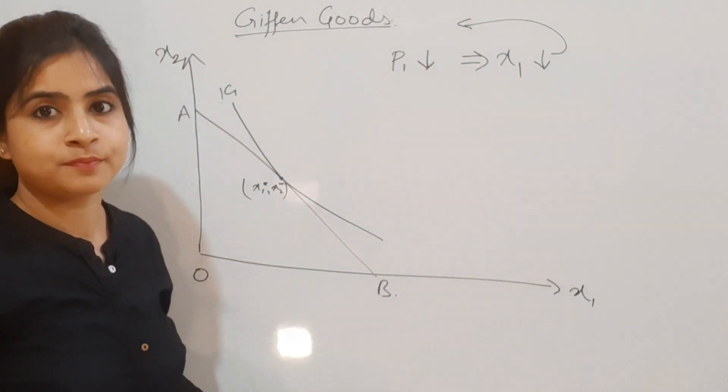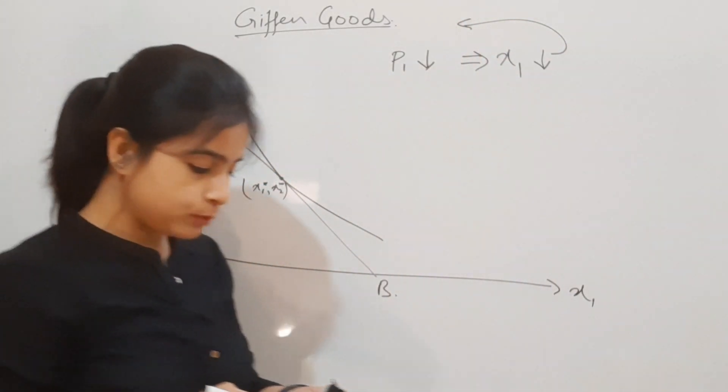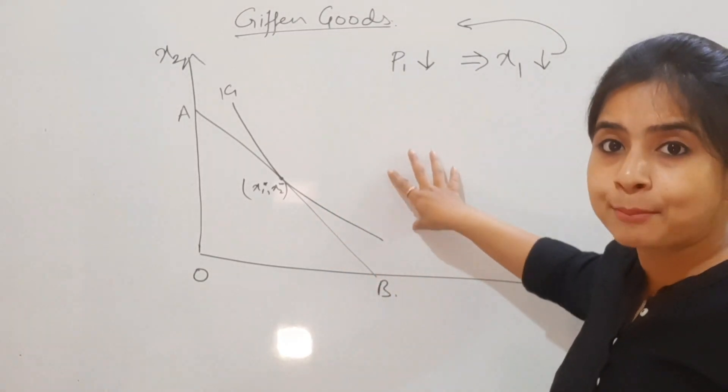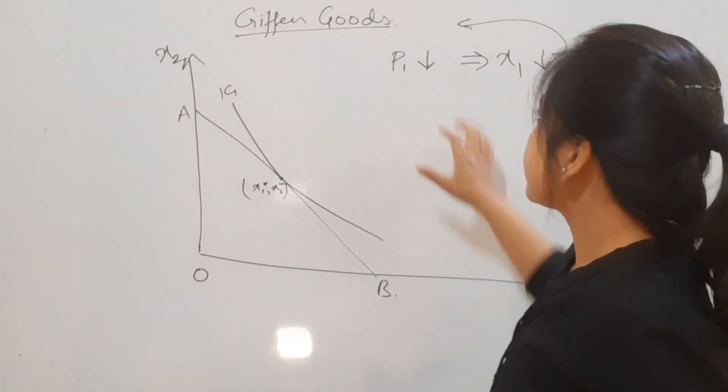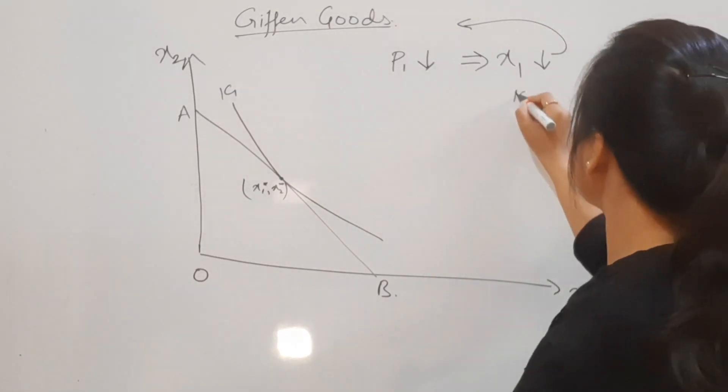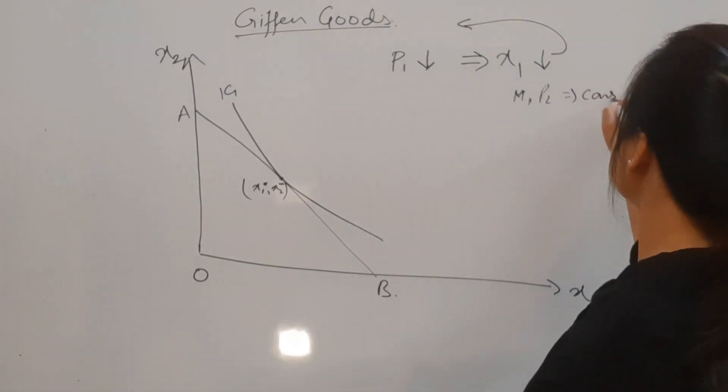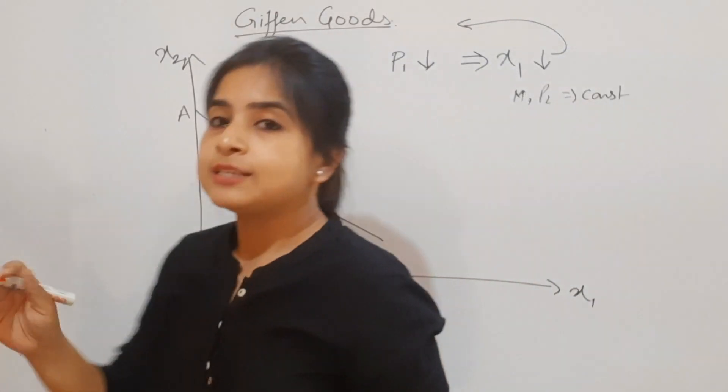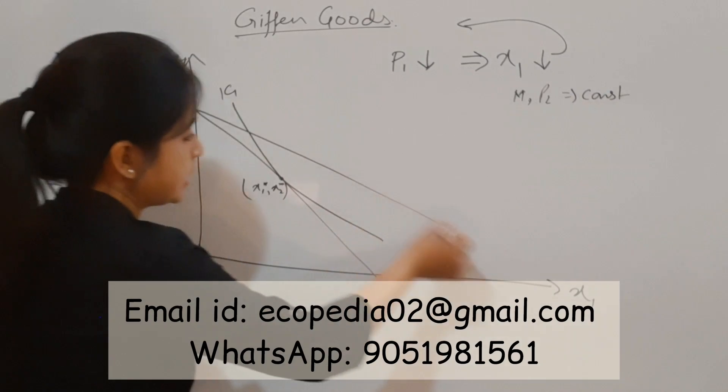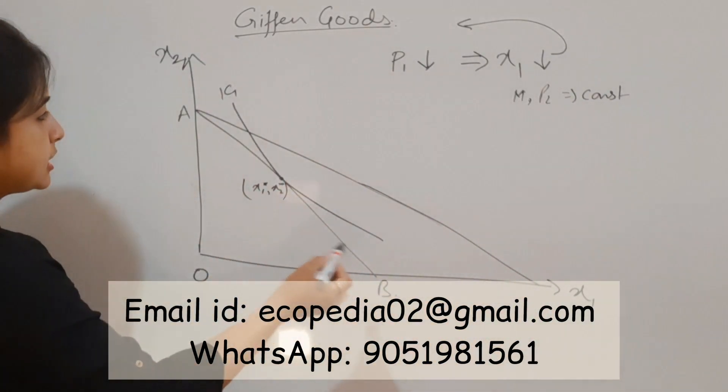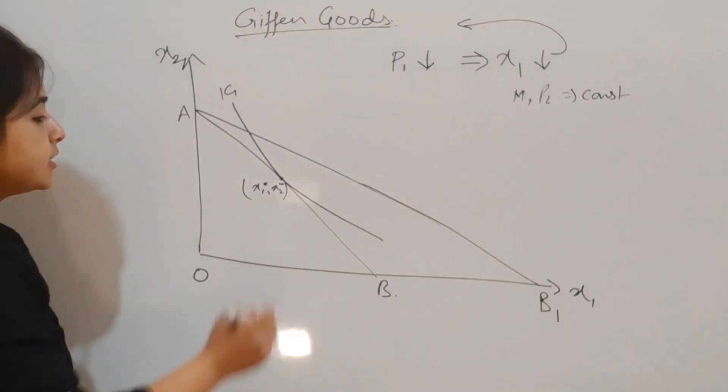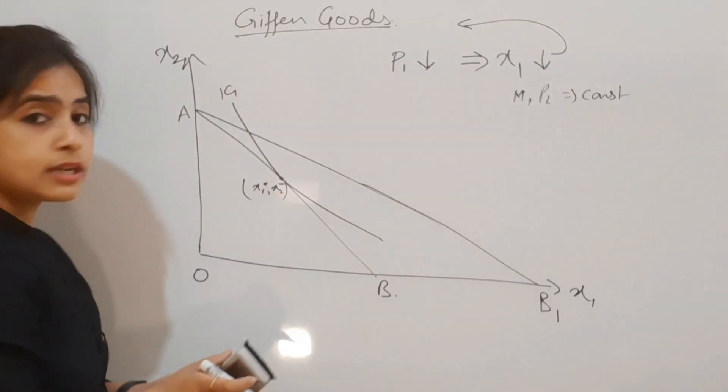Again taking a situation where price of p1 reduces, but this time the consumption of x1 also reduces. If this is the case, it's a situation of Giffen goods. Given p1 reduces, m and p2 are constant. This means the budget line will become flatter. This is the new budget line, AB1.